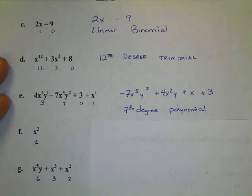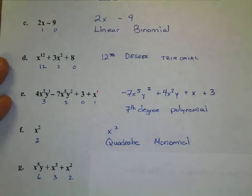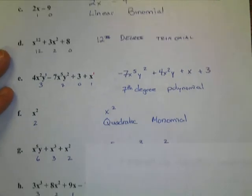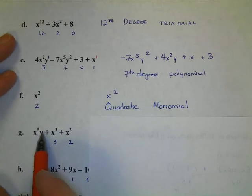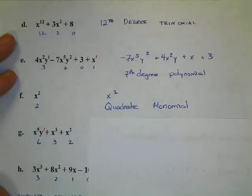As we move down to g, we add up our degrees again. 5 plus 1 is 6. x cubed and x squared are degrees 3 and 2, respectively. And so, what is this? This is very simply written in the correct order already. And it's a 6th degree trinomial.